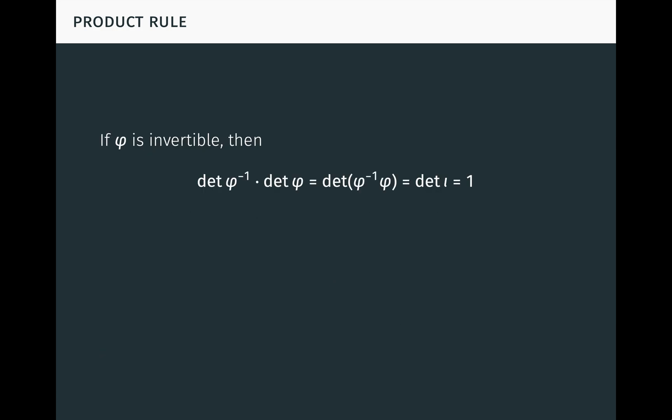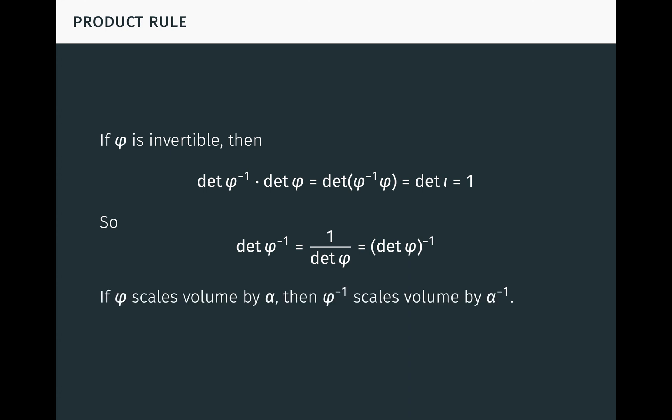This result shows that if phi scales volume by alpha and psi scales volume by beta, then the composite psi∘phi scales volume by beta times alpha, which is very intuitive. In particular, if phi is invertible, then det(phi^{-1}) times det(phi) equals det(phi^{-1}∘phi), which is det of the identity, which is 1. So the determinant of phi^{-1} is 1 over det(phi), the multiplicative inverse of det(phi). This shows that if phi scales volume by alpha, then phi^{-1} scales volume by alpha^{-1}.